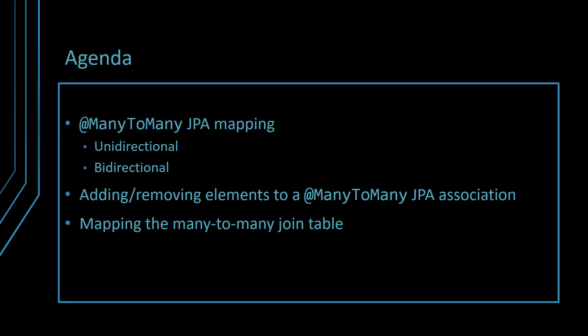Just like the one-to-one relationship, the many-to-many association can be either unidirectional or bidirectional. While adding elements to a many-to-many JPA association does not depend on the underlying Java collection type, when removing elements, the many-to-many JPA relationship behaves just like a unidirectional one-to-many association. The many-to-many JPA association hides the join table from the application developer. However, if you want to map additional columns of the underlying join table, you have to map the intermediary table as a JPA entity.